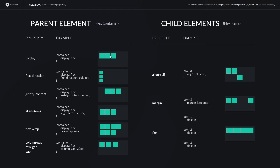Let's say we want the items to sit along the row but centered horizontally. We can use `justify-content` for that — setting it to `center` will center them horizontally. Or if we want them centered vertically along the row, we can use `align-items`. It's pretty easy to switch up the layout with these two properties.